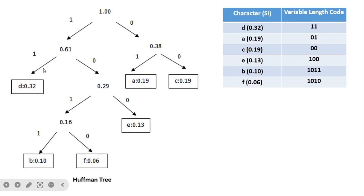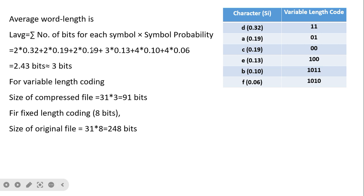From the Huffman tree: D requires 2 bits, A is '01', C is '00'. More frequent characters get fewer bits. Average word length = 2×0.30 + 2×0.19 + 2×0.19 + 3×0.13 + 4×0.10 + 4×0.06 ≈ 3 bits per character. Compressed file size: 31 × 3 = 91 bits. Fixed-length encoding: 31 × 8 = 248 bits.